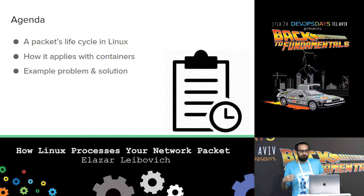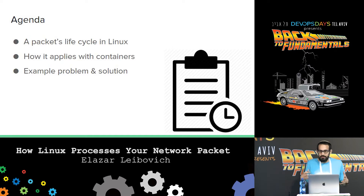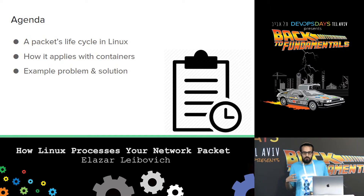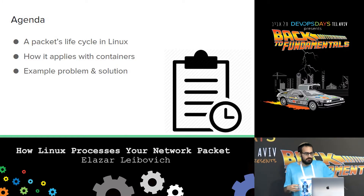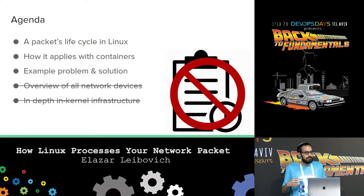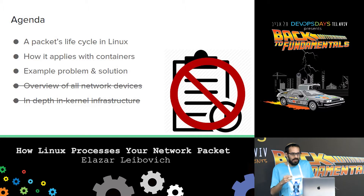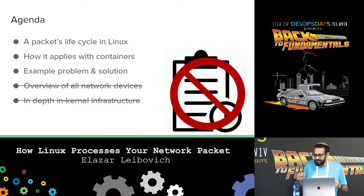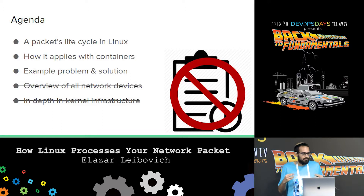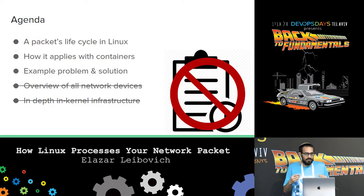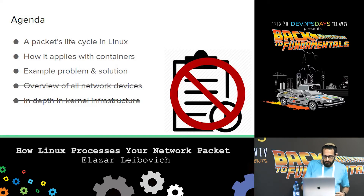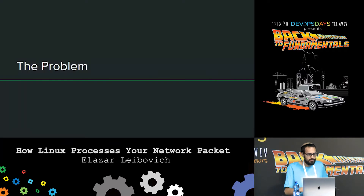Today I'm going to explain how network packets are processed through an example — a problem one can run into when running containers and Docker. This is not a comprehensive talk about every possible Linux network device, and not an in-depth talk about every little detail the kernel does to the packet once received. I would skip details and simplify things. What's important is to give you the high-level view and get you enthusiastic. I'll be very happy if anyone exits this talk wanting to learn more about networking in general and Linux networking in particular. So let's start right away.